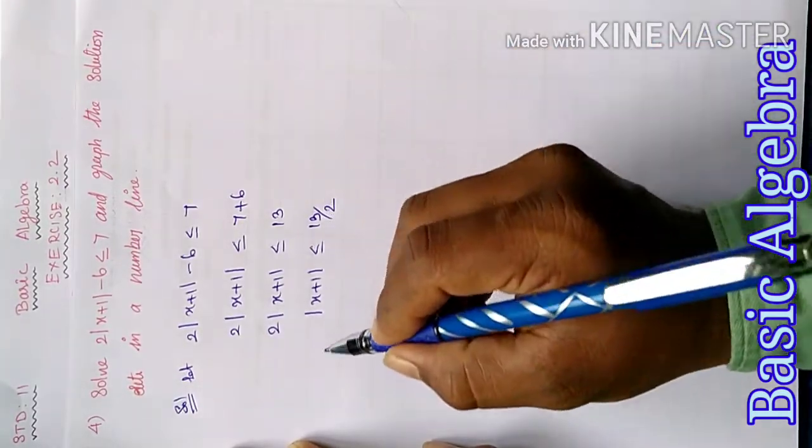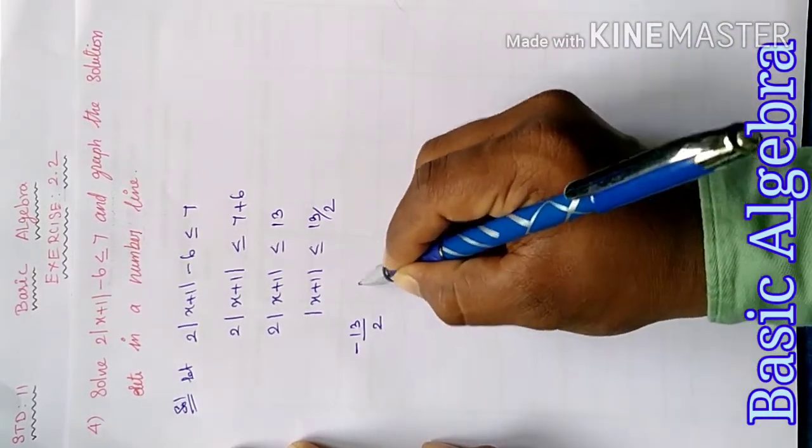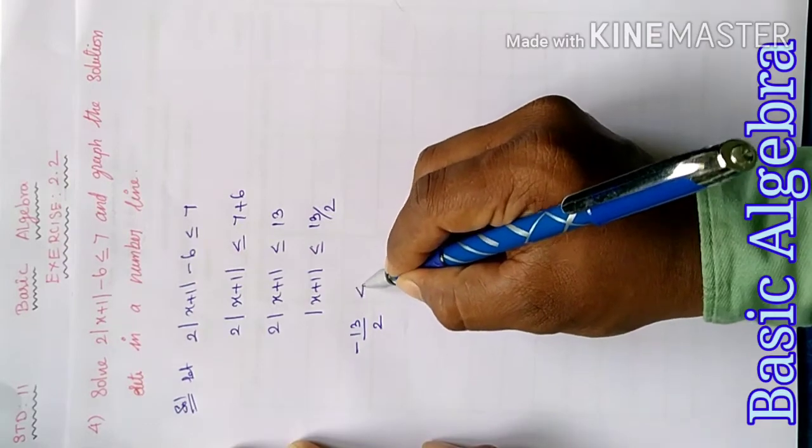Now we set up the double inequality. Therefore, minus 13 by 2 less than or equal to x plus 1 less than or equal to 13 by 2.